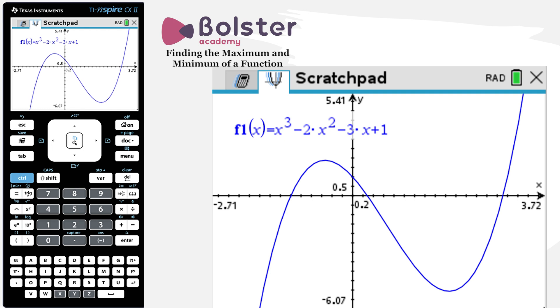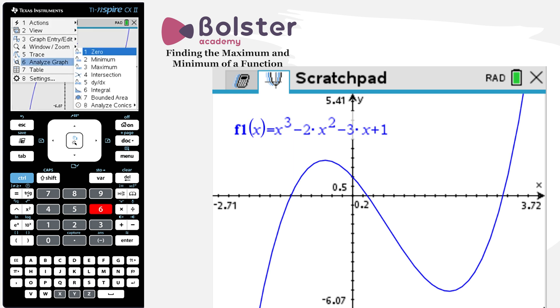Well, imagine the following graph: x cubed minus 2x squared minus 3x plus 1. So this is a cubic function. And imagine that you've been asked to find the local maximum point on this graph. So I would just go into menu, I'd hit analyze graph number 6.